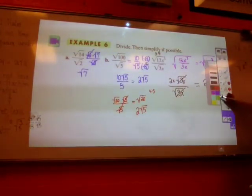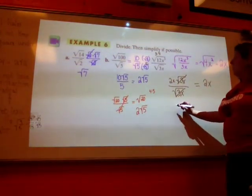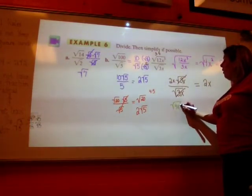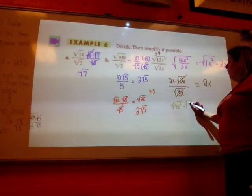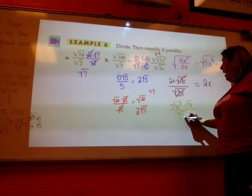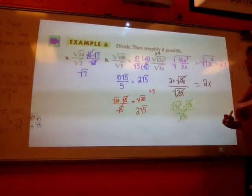Do you do something different? All right. What'd you do? I did square root of 4x squared times square root of 3x. So you get the square root of 4x squared times the square root of 3x all over the square root of 3x.